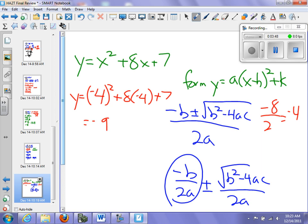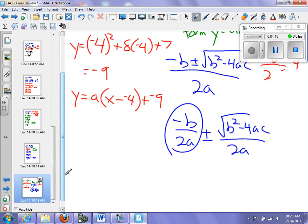So I now have my vertex. I have y is equal to a times x minus negative 4 squared plus k, which is negative 9. So y is equal to a times x plus 4 squared minus 9.